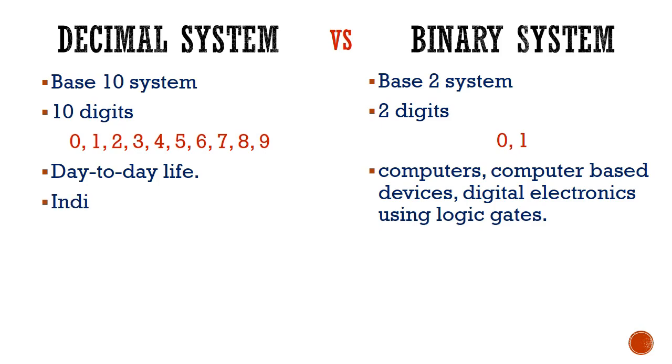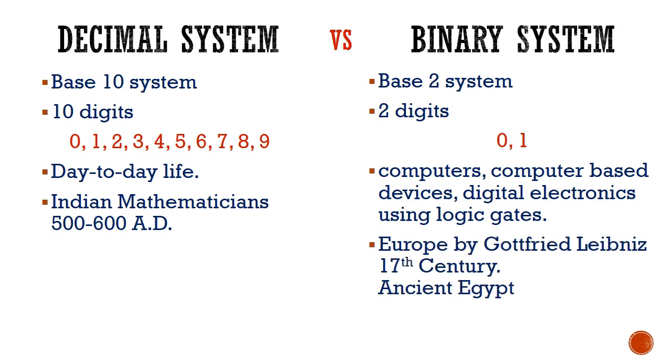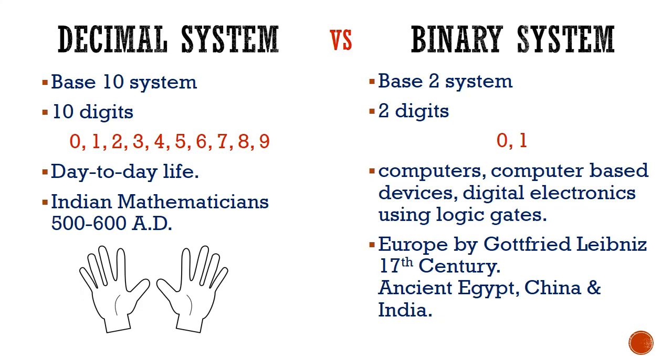Decimal system was discovered by Indian mathematicians around 500 to 600 AD after the discovery of number 0. The modern binary system was studied in Europe by Gottfried Leibniz in 17th century but it was also studied in ancient Egypt, China and India.